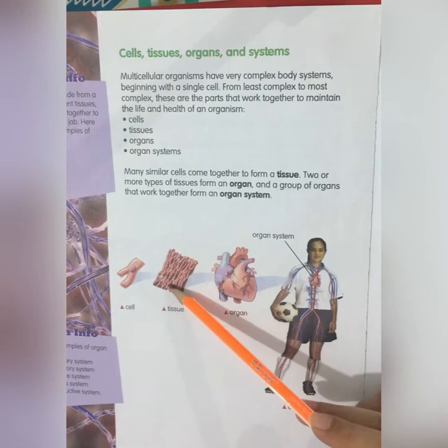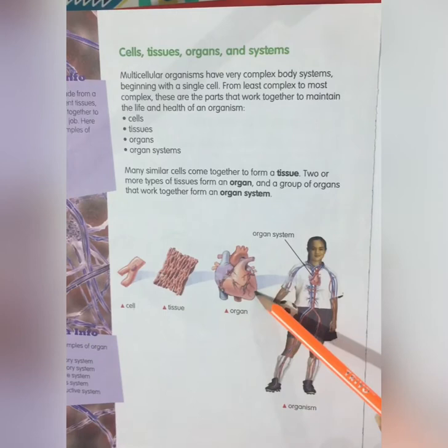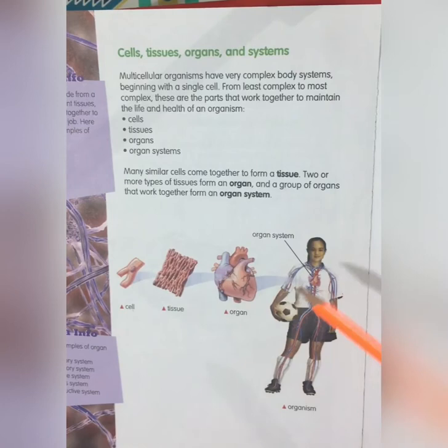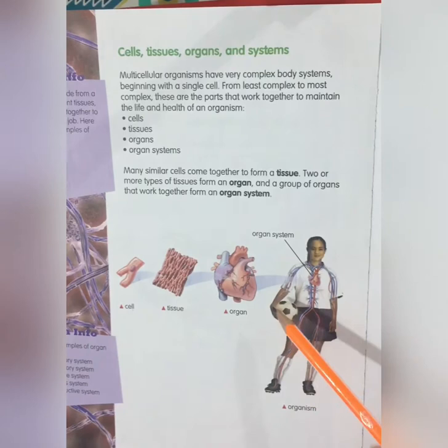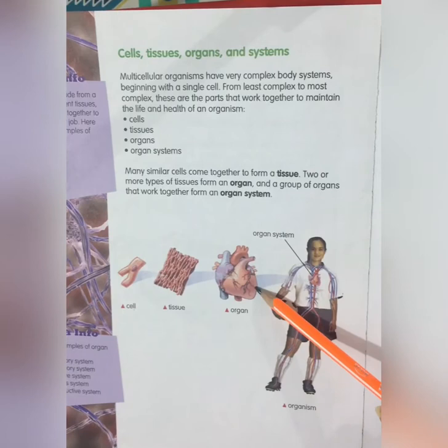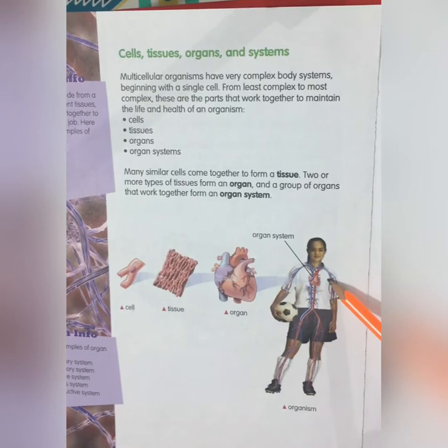When many of the same kind of tissues are available, they combine together and form an organ. As you can see, the heart is an organ found in our human body. This organ works together with others in the human body to form an organ system.